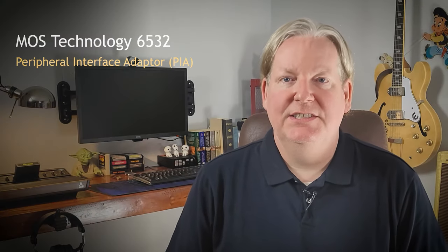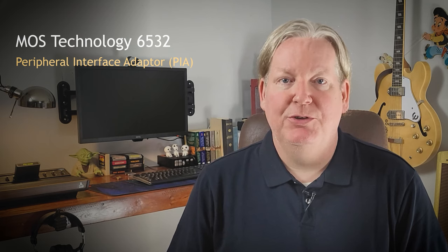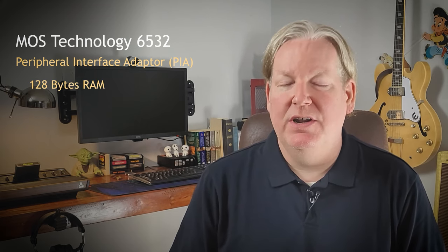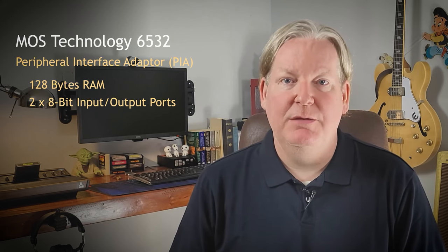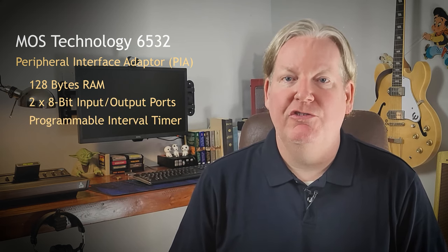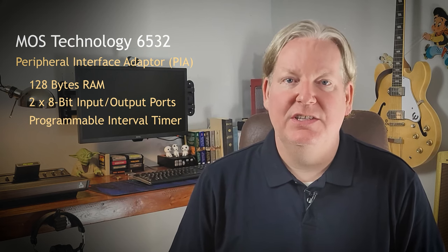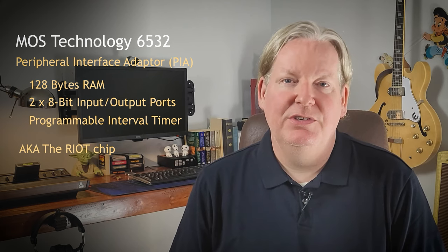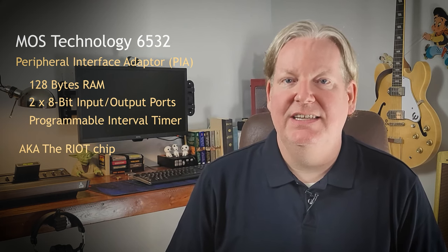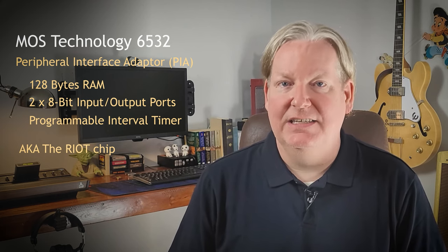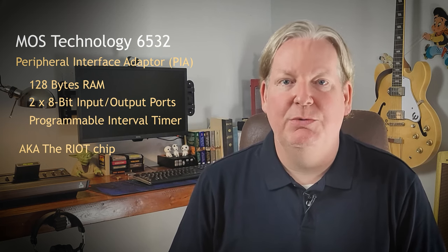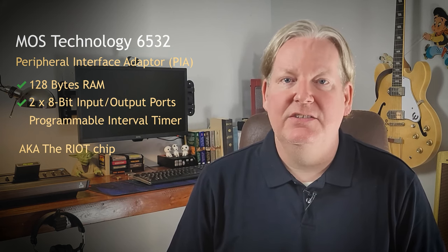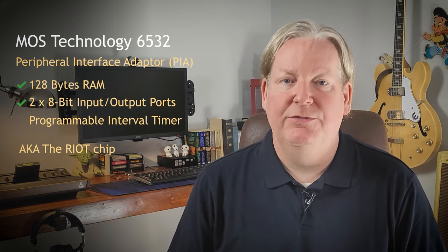The MOS Technology 6532 Peripheral Interface Adapter, or PIA for short, provides the Atari 2600 with its 128 bytes of RAM, two 8-bit input/output ports, and a programmable interval timer. It's also known as the RIOT chip — a mashup of RAM, IO, and Timer. The chip has been used in any number of applications in the 1970s and early 1980s, from pinball machines to disk drives to the Atari 2600. We've already covered RAM and IO in previous episodes, so let's look into the programmable interval timer.